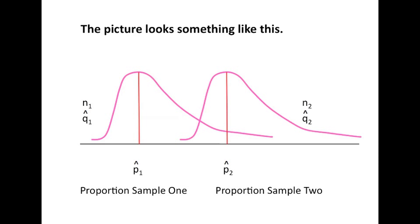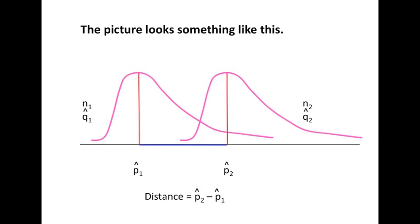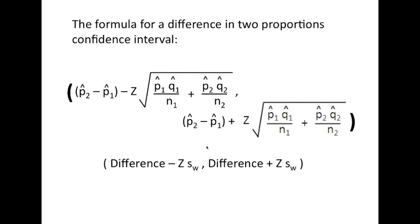So we have P hat one, Q hat one, N one, P hat two, Q hat two, and N two. Having these two individual proportioned samples, now we're interested in what is the difference between P hat two and P hat one. And this area is covered in blue. That's what we'll be looking for.